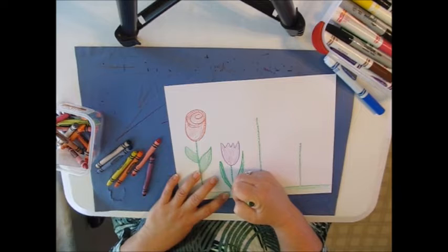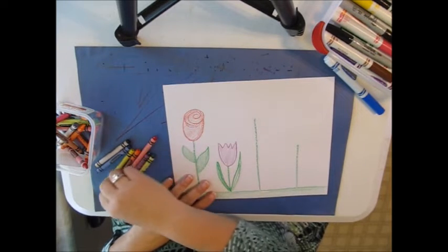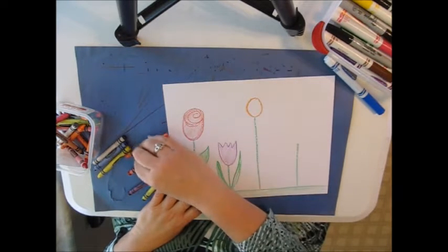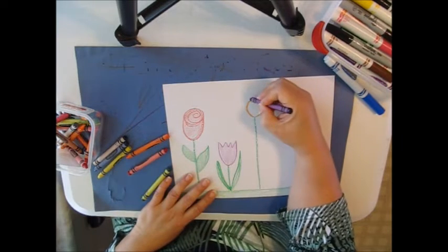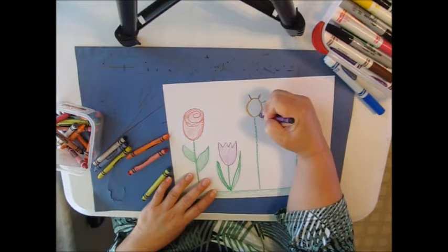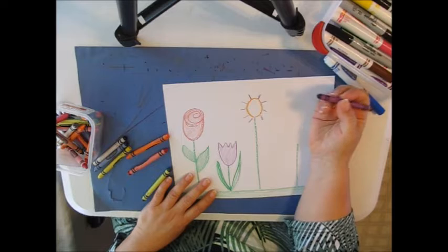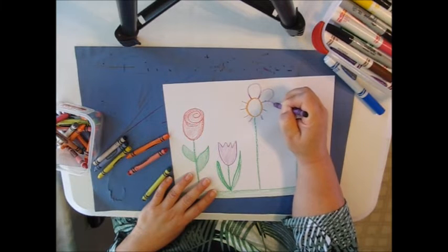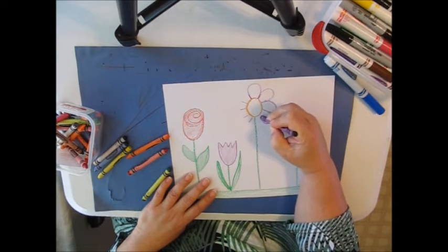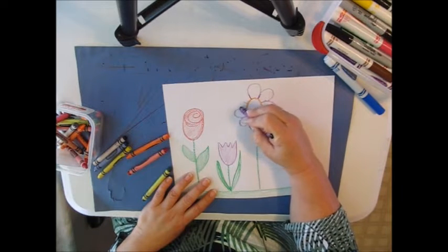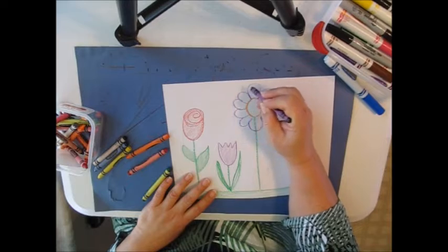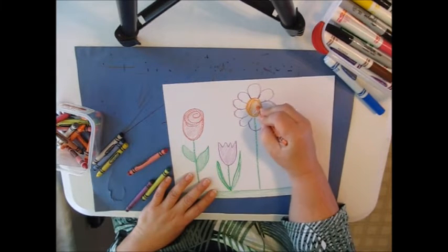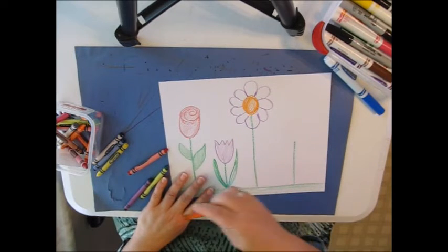My next flower will be similar to a daisy. It has a circle for the middle. And then it has some petals, kind of looks like the sunshine that we draw. I did that so now I'm going to connect those to make my petals. I think that one looks more like a daisy. So I'm going to fill the inside in. I think I'm going to leave the petals white.